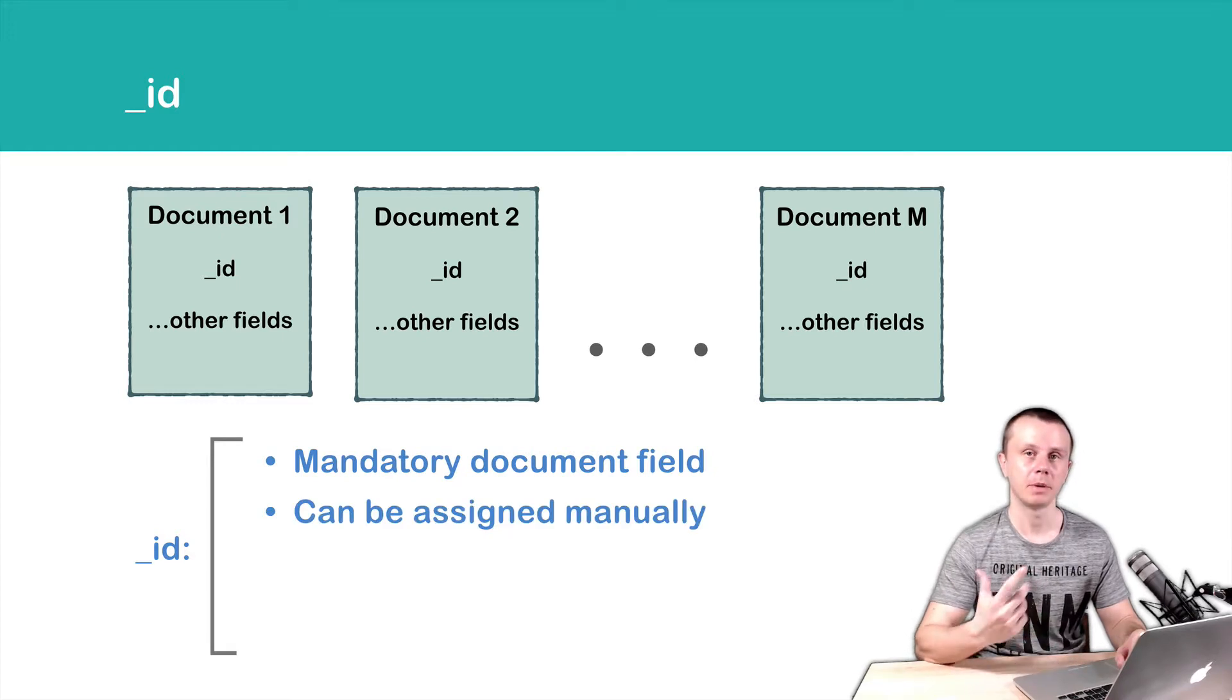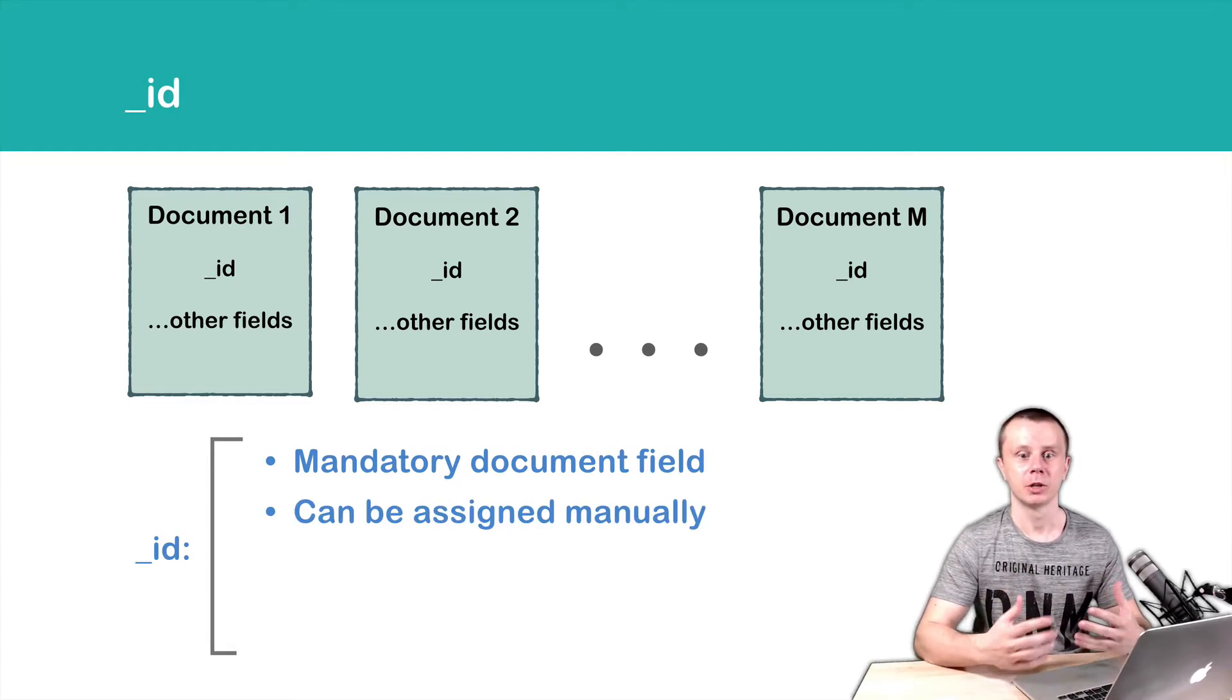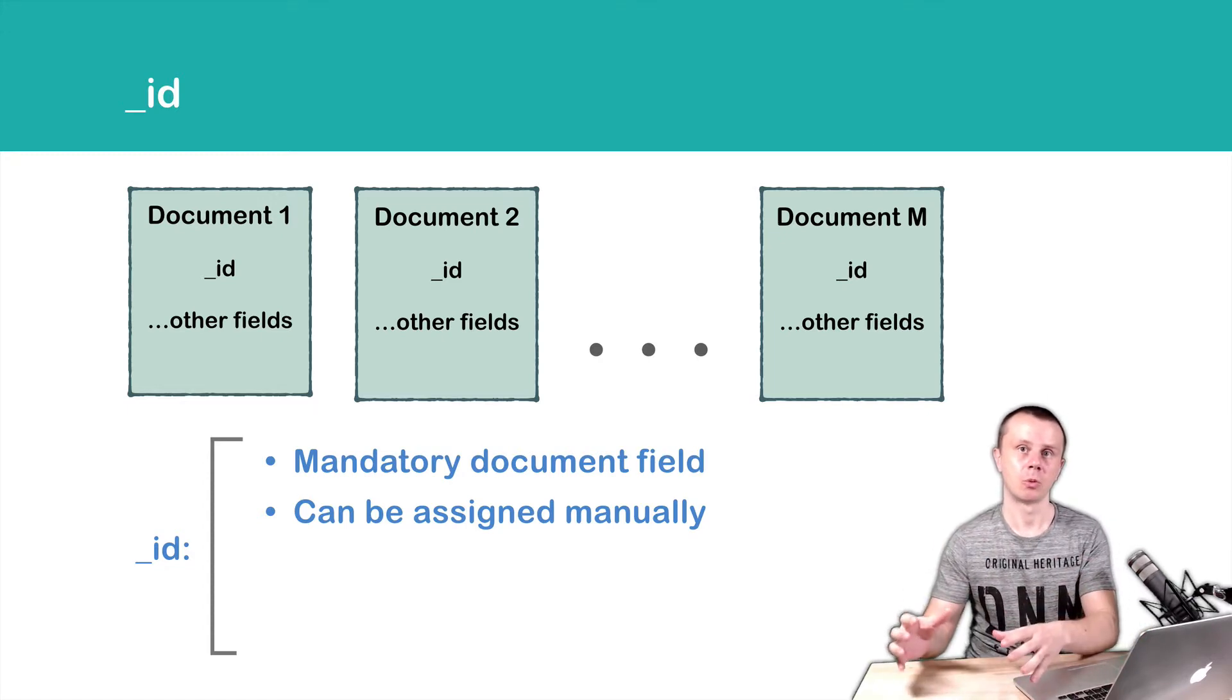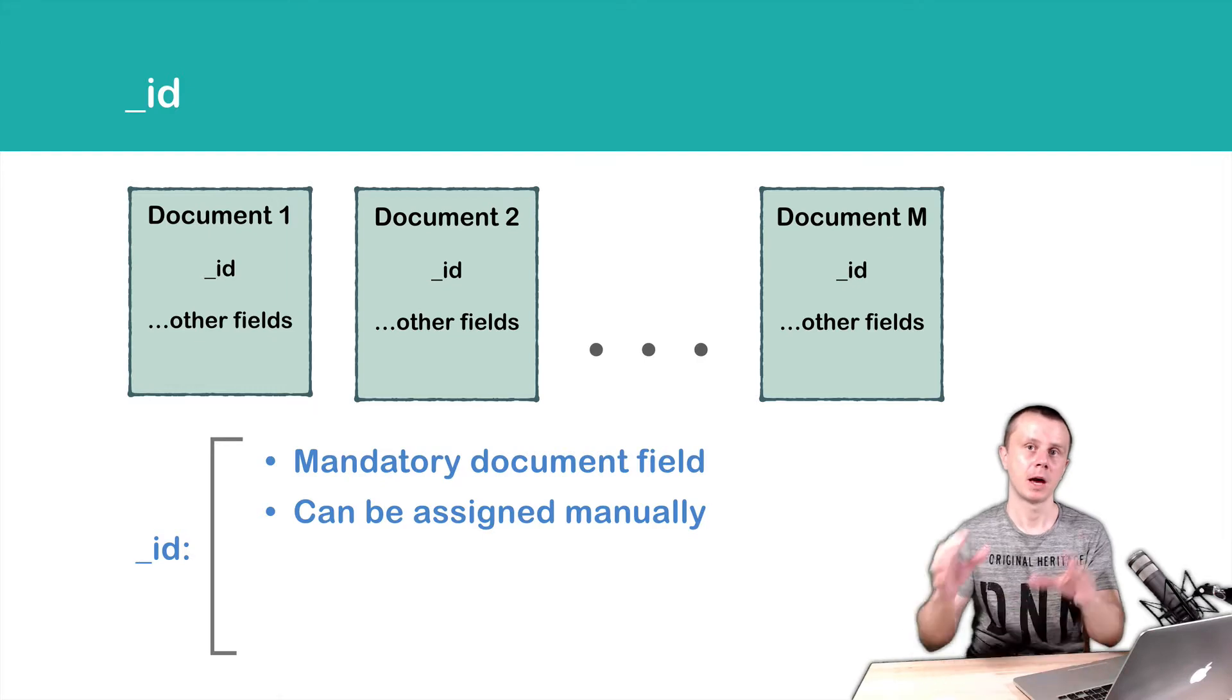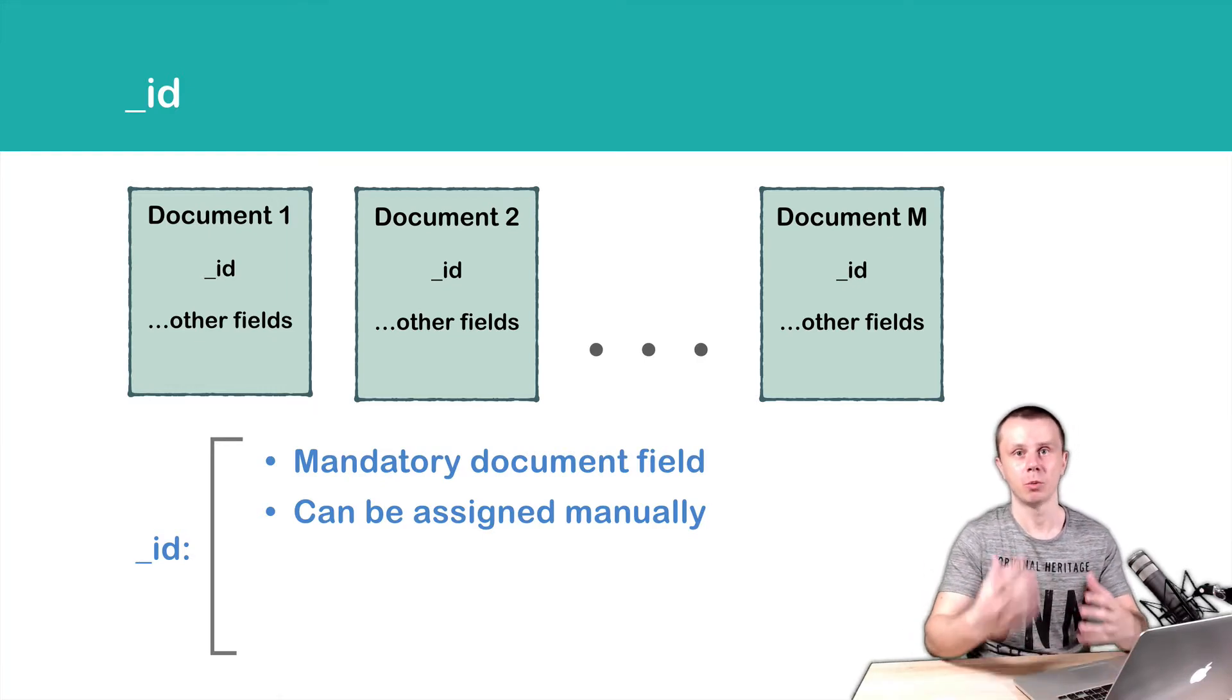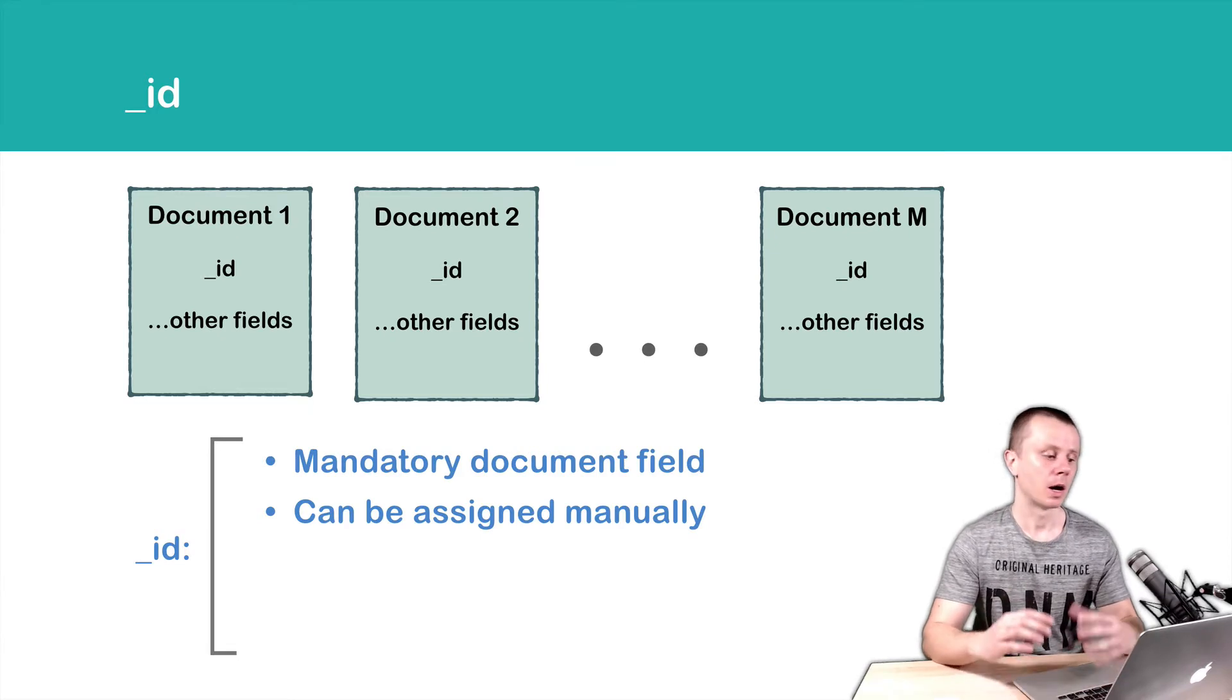This field can be assigned manually and usually it is retained when you, for example, export data from one MongoDB database and import into another MongoDB database. In this case, you may want to preserve underscore IDs of all documents in the original database.